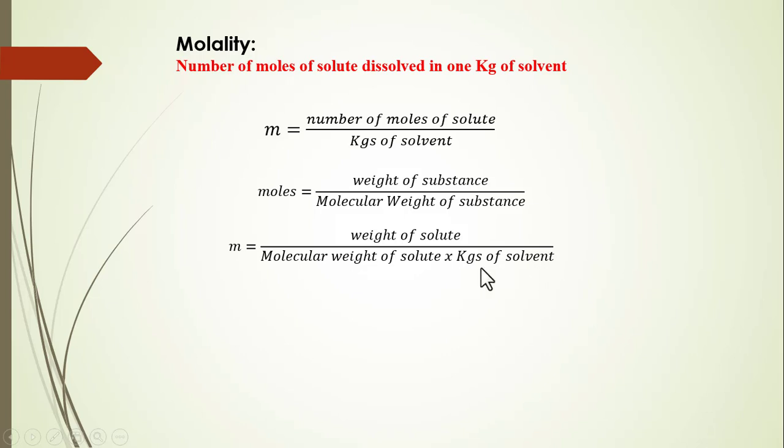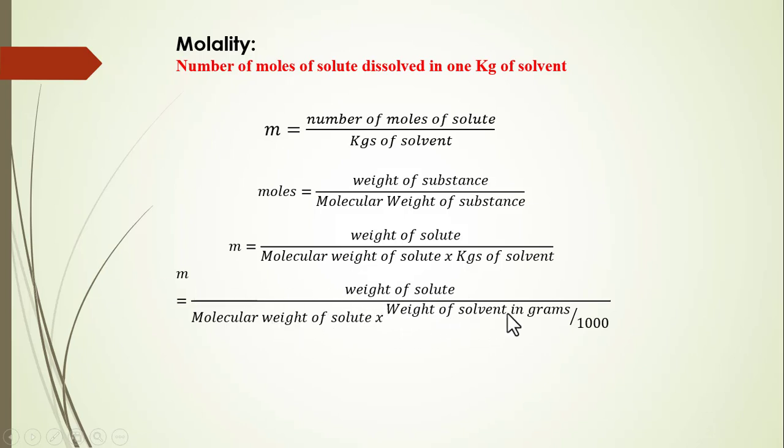In order to simplify it further, we can also take the weight of solvent in grams and convert it into kilograms. So the new form of this equation would be: molality equals weight of solute divided by molecular weight of solute times weight of solvent in grams divided by 1000. Since this is a double division, this 1000 would go up with weight of solute. So our final equation is: weight of solute times 1000 divided by molecular weight of solute times weight of solvent in grams.